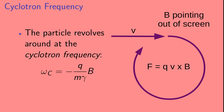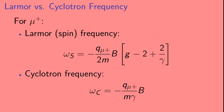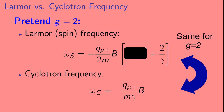Let's compare this to the spin or Larmor precession frequency we saw earlier. Here we give the expression for the spin and cyclotron frequencies for the antimuon. Notice that they're both proportional to the charge and the magnetic field, and inversely proportional to the mass. If we pretend for a moment that g equals 2, then the g minus 2 term in the spin frequency is zero. Looking more closely, if g equals 2, the spin frequency and the cyclotron frequency are equal.